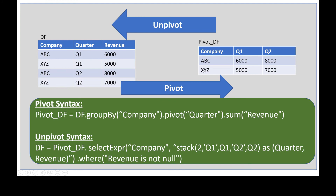When we pass this dataframe as input to the pivot function, the output shows companies ABC and XYZ with Q1 and Q2 as separate columns, acting as a matrix. For company ABC, quarter Q1, the value 6000 appears in the matrix. That is the output of the pivot function. For unpivot, passing the pivot dataframe as input produces the original row-based structure by converting the columns Q1 and Q2 back into data, added to all rows of the dataframe.